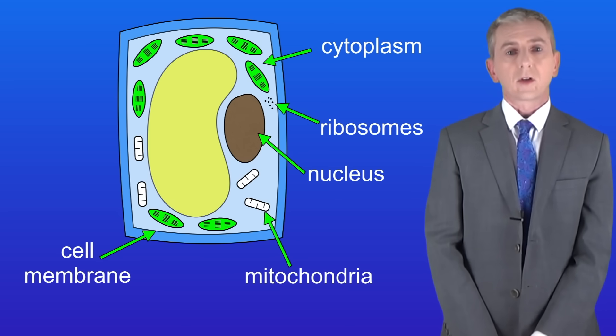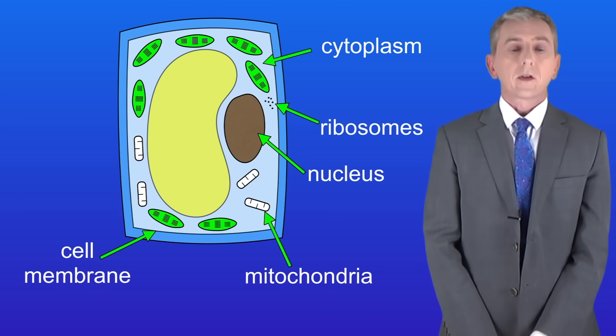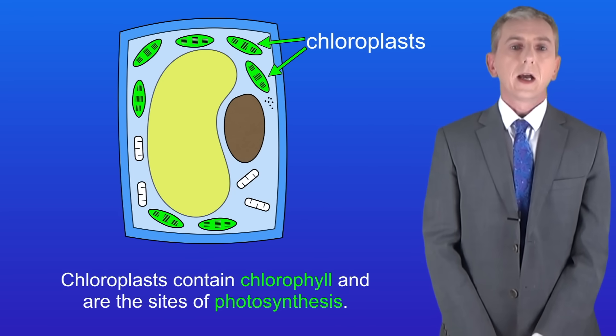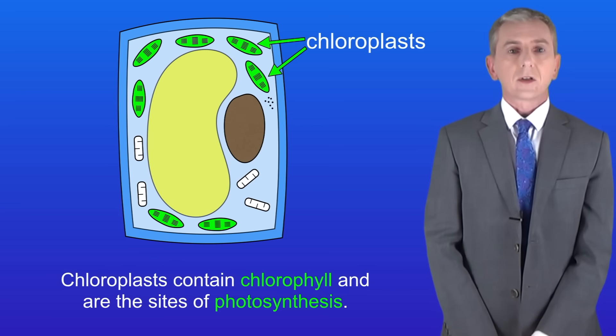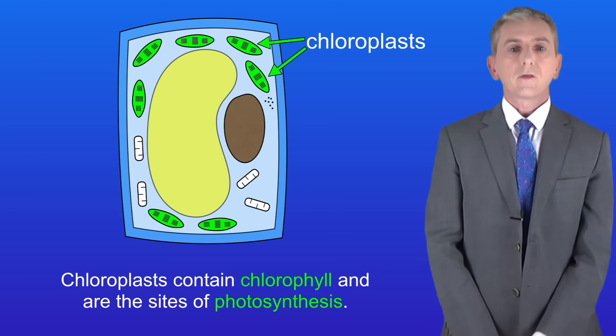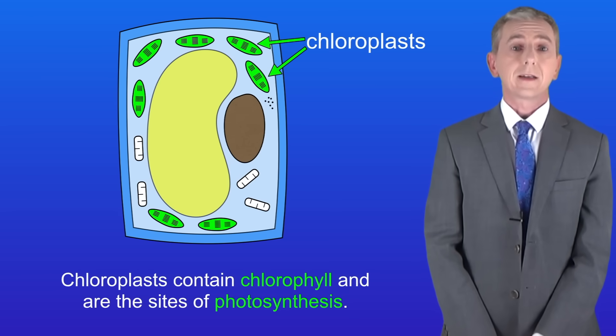Now plant cells have three structures which animal cells do not, and it's really important that you learn these. As we saw before, plant cells are packed full of green structures and these are called chloroplasts. Chloroplasts contain chlorophyll and are the sites of photosynthesis. We'll be looking at photosynthesis in much more detail in later videos.